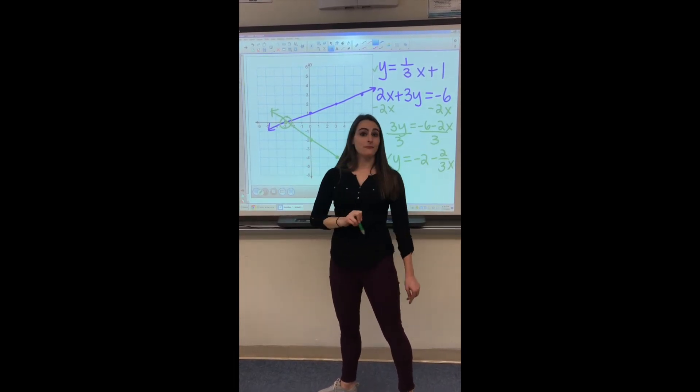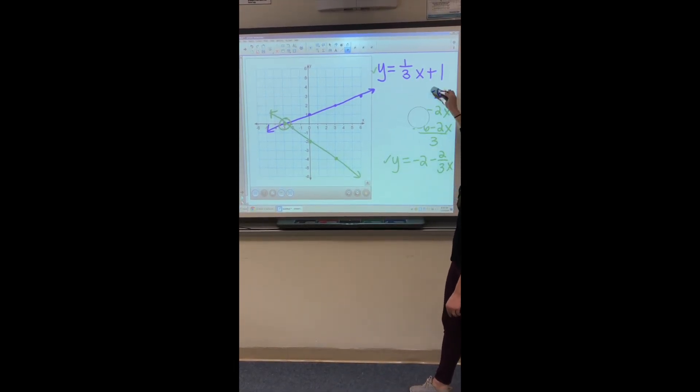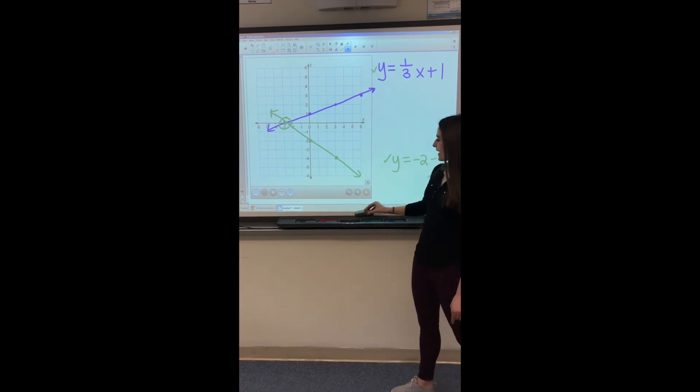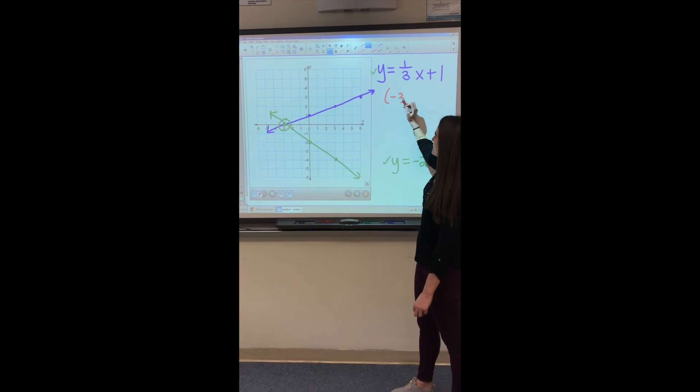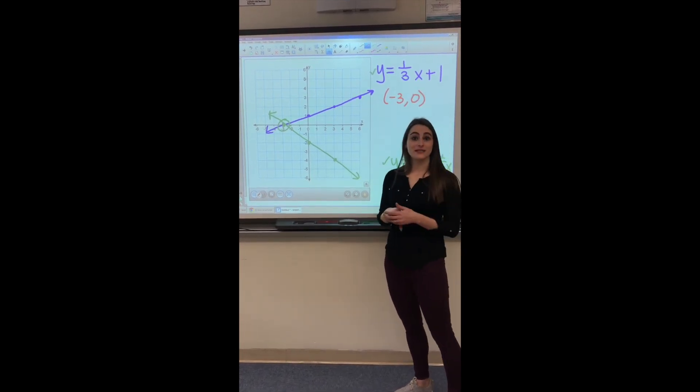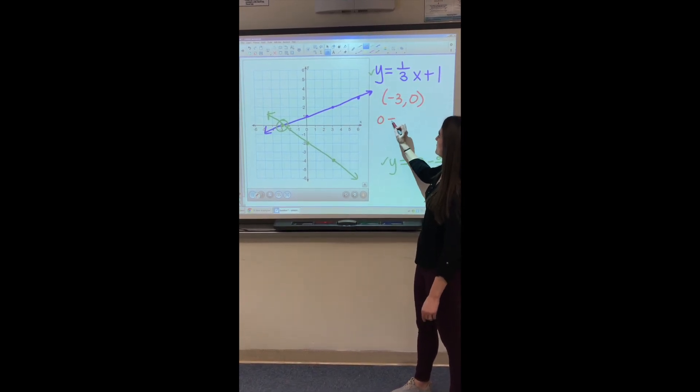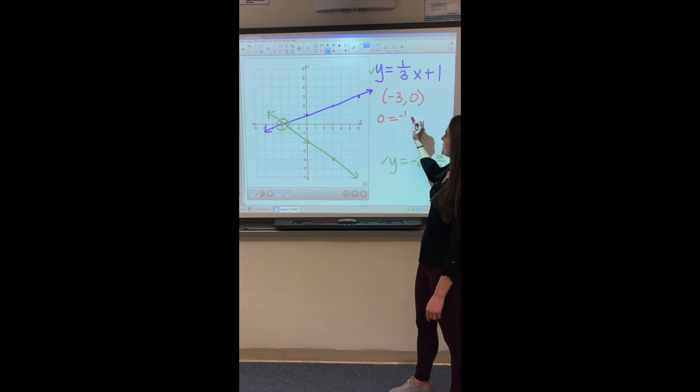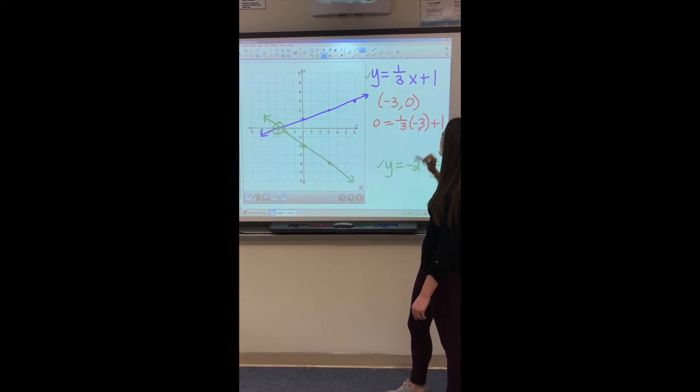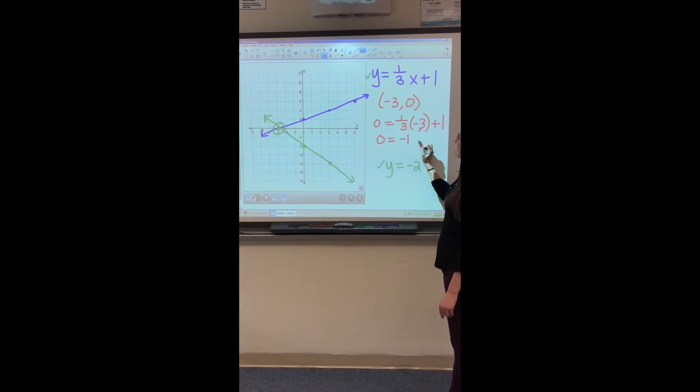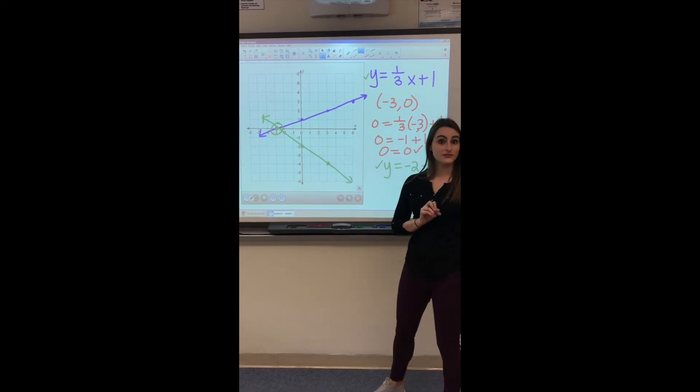So here is our solution that we want to check. So we'll erase this just to make some room here. So just as Ms. Sullivan did the first time, our solution point is negative 3, 0. But we always want to check to make sure we didn't make a careless error. So where the y is, we're going to plug in our y-coordinate of 0. Where the x is, we're going to plug in our x-coordinate of negative 3. And we're going to see that we do in fact get a true statement here. So it works with our first equation.